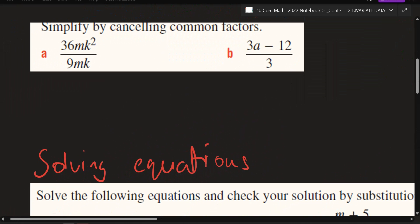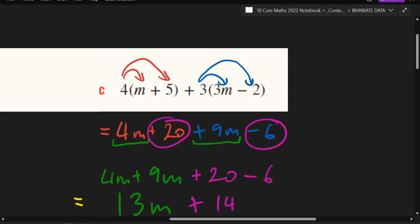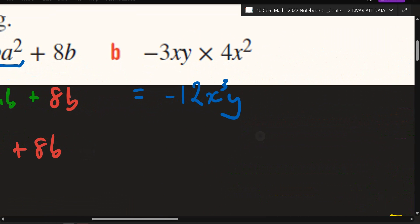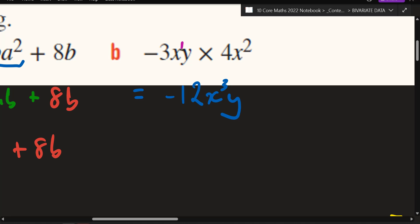Let's do that first one. This is division — the opposite of multiplication. Instead of multiplying numbers, you're dividing; and instead of adding the little letters' powers, you're going to be minusing them. So let's look at this: 36mk squared divided by 9mk. Start with the big numbers — 36 divided by 9.